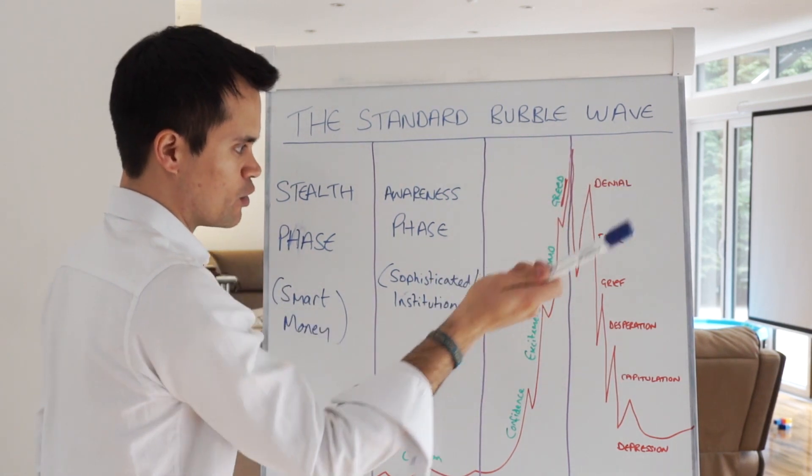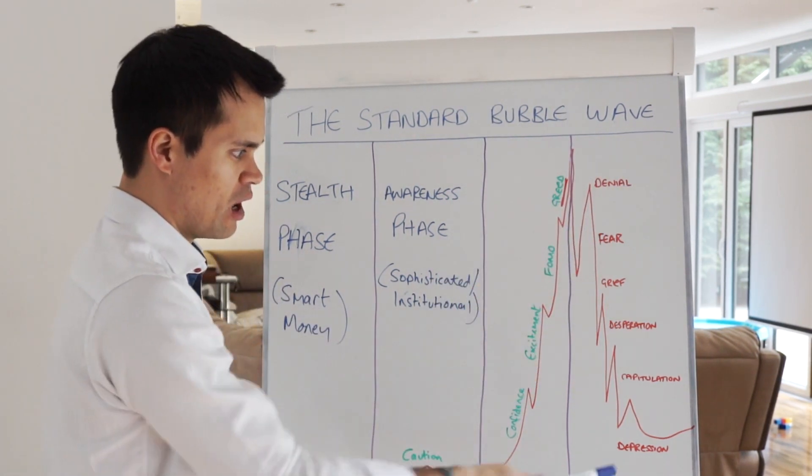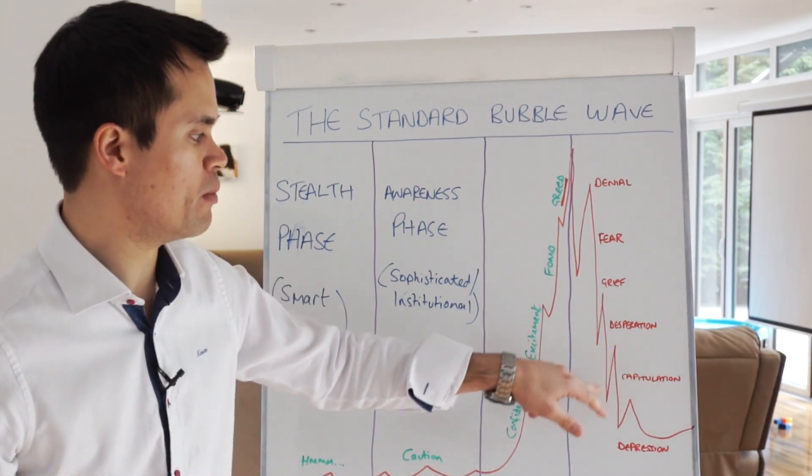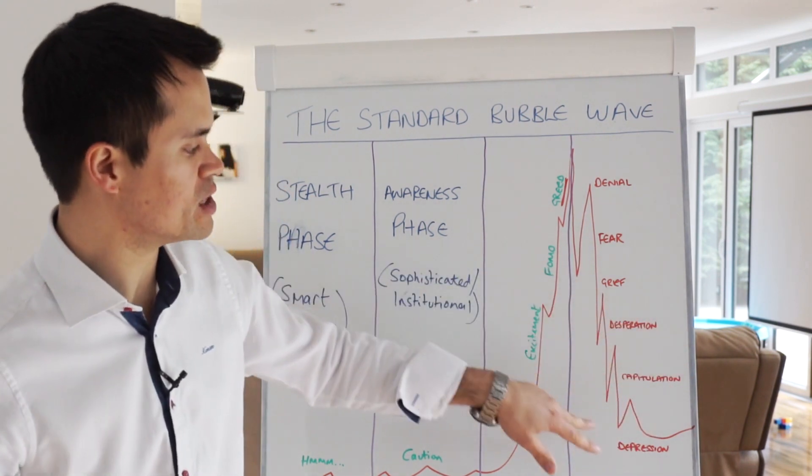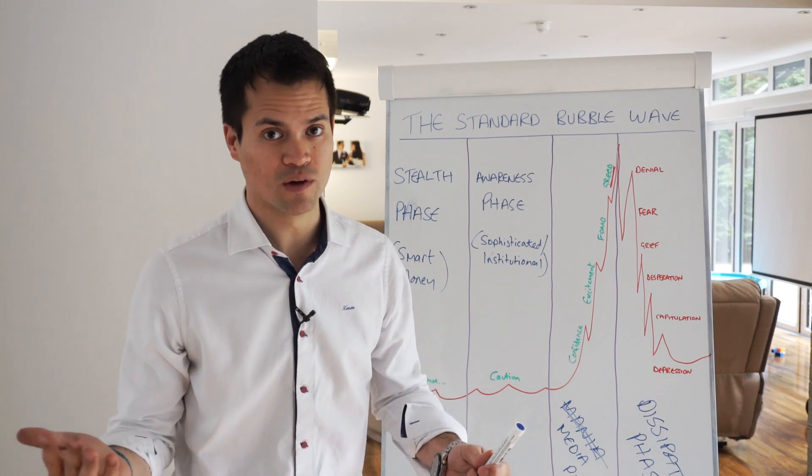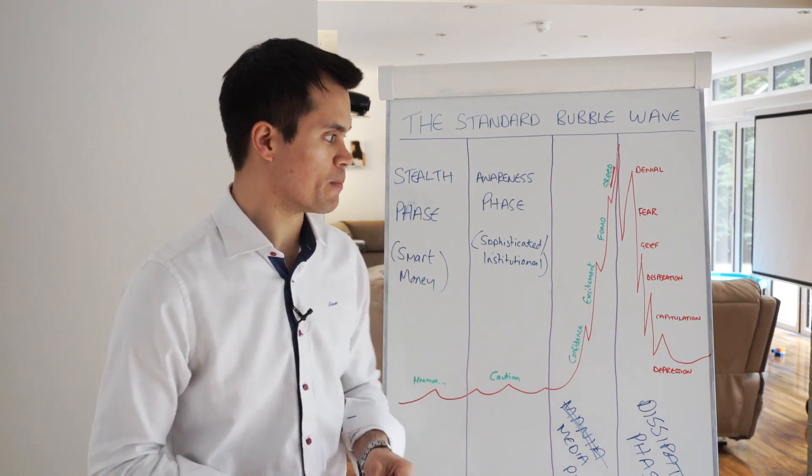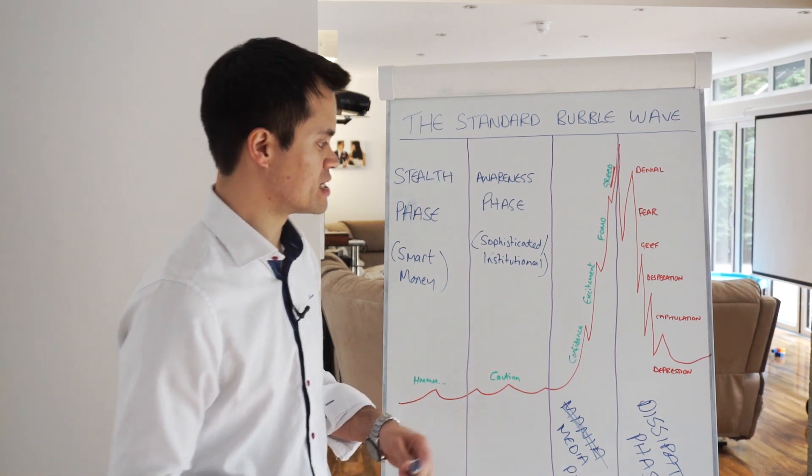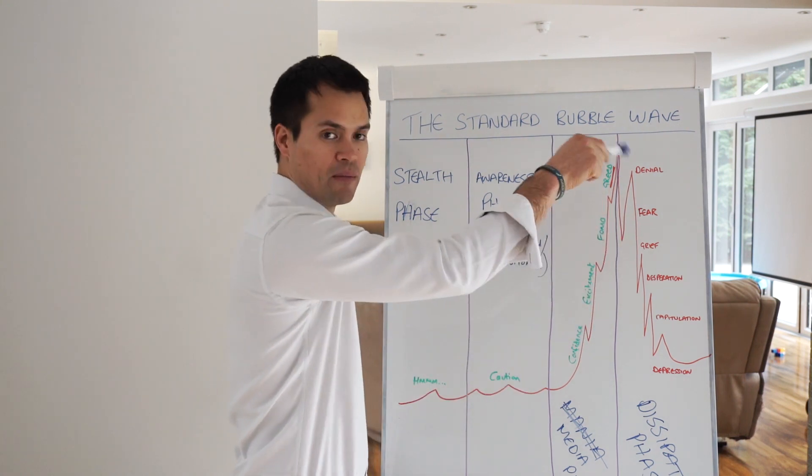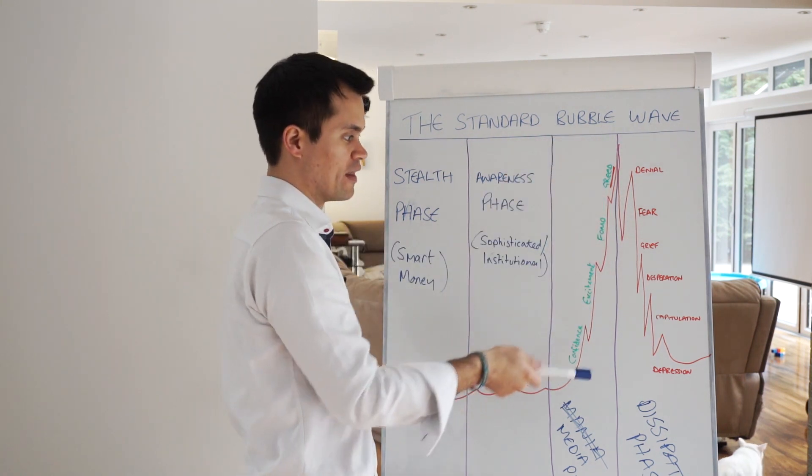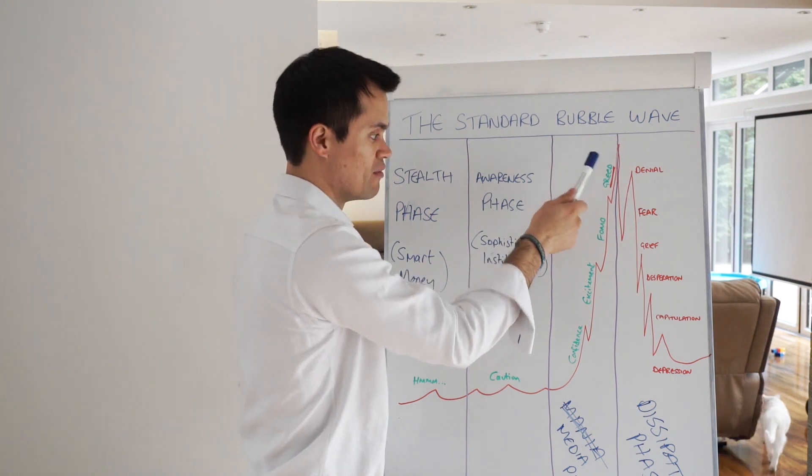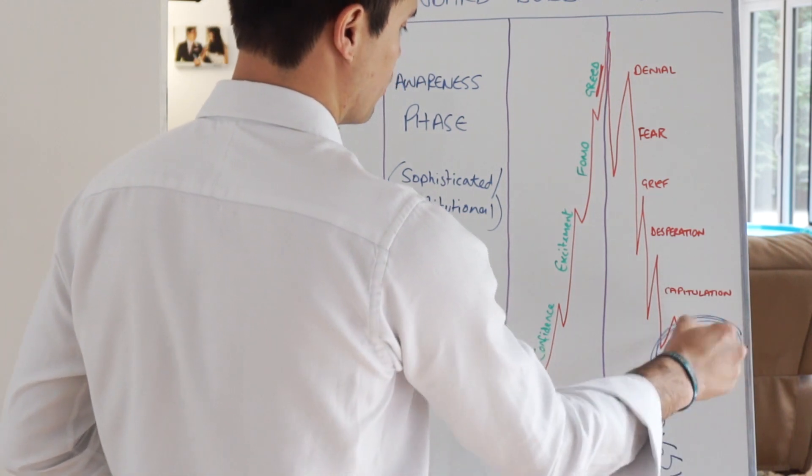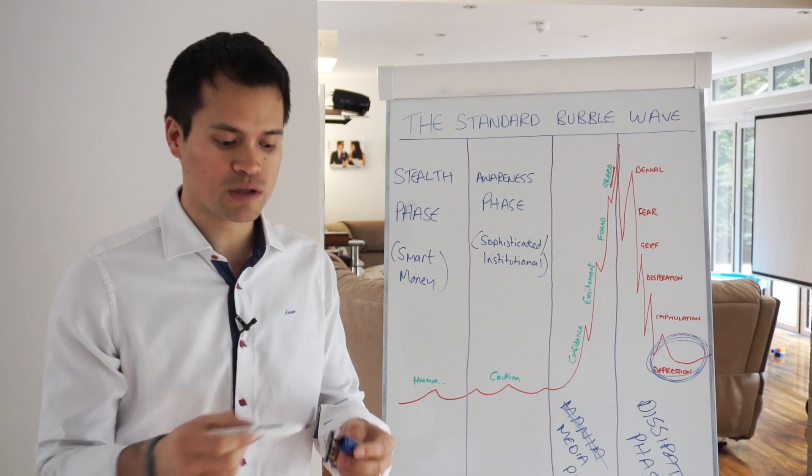You then see denial, fear, grief, desperation, capitulation, and then eventually depression. It's normally around this part of the bubble where you tend to see suicide sometimes. If you look at 1929, there was a massive spike in suicides, which isn't a good thing. Around here, the smart money, these boys exit up here, and that's where the public are really starting to buy heavily. Then the smart money are buying everything down here when they know everything has crashed. That's what you need to do, you need to use the public as a contrarian indicator.